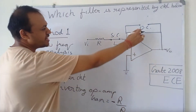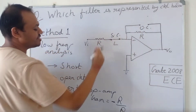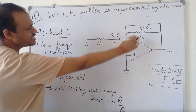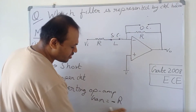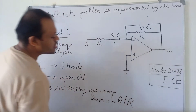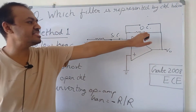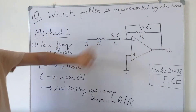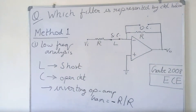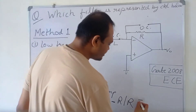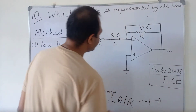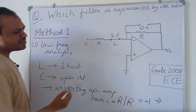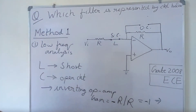The R in the numerator is the feedback resistor and the R in the denominator is the input resistor. So this gain is equal to minus 1. Therefore, V₀ will be equal to minus Vᵢₙ. At low frequency, V₀ is equal to minus Vᵢₙ.